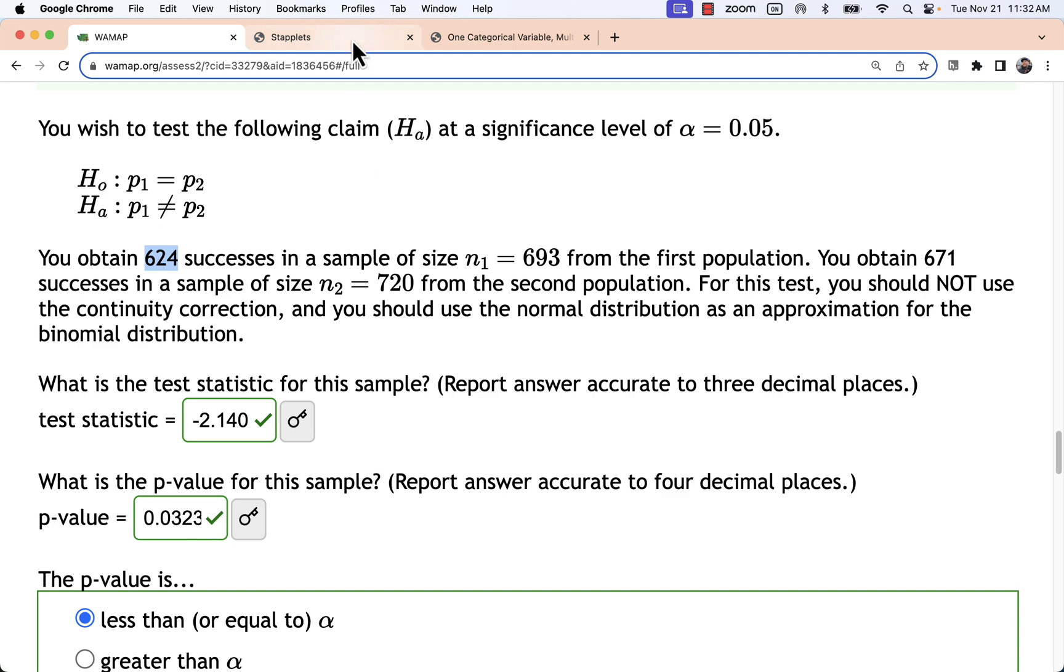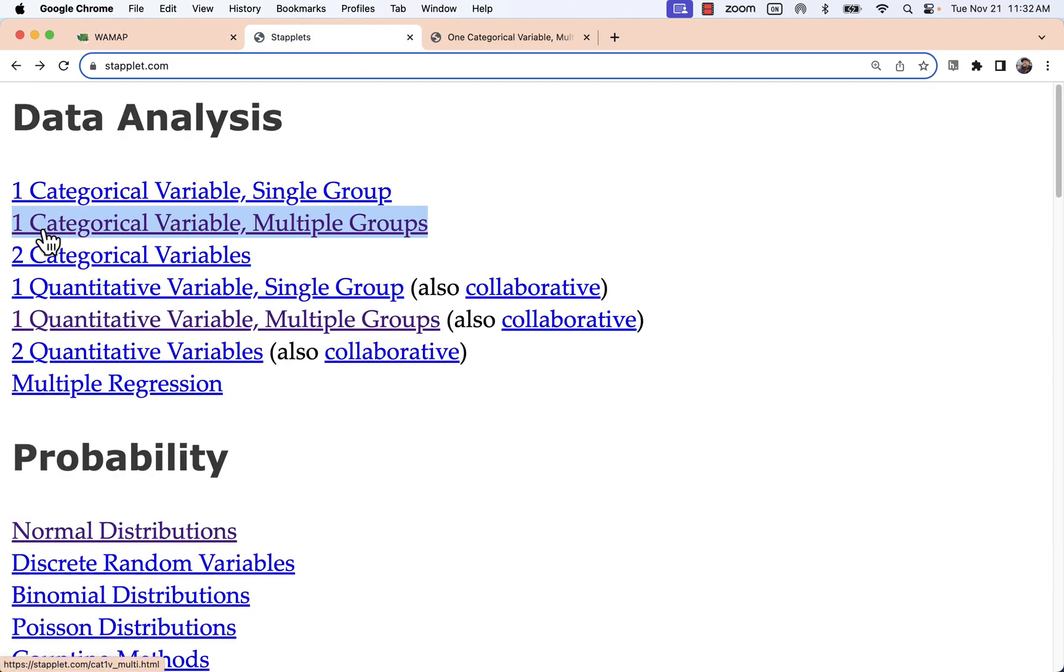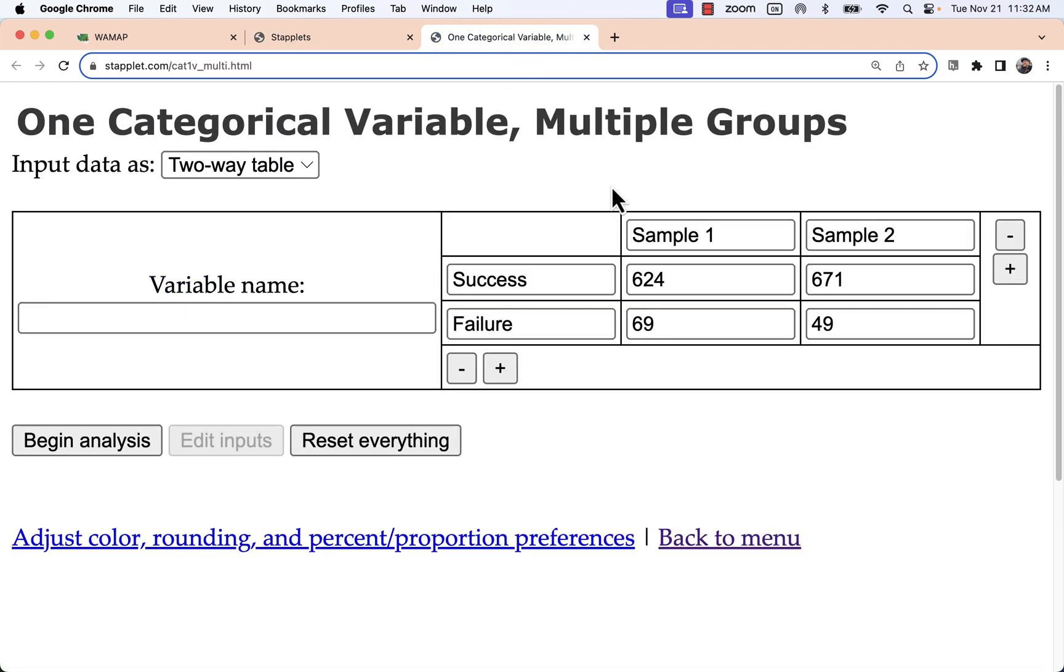Where I take that information is Staplet, one categorical variable, multiple groups, and I will enter in my two samples and my responses down the side. If I knew the variable name I could put it there. If I knew the responses like yes versus no I could put them here, but this one has no context. So there's my given number of successes for each group.